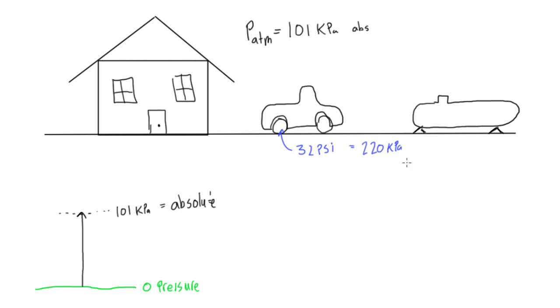Alright, now this is actually what we call a gauge pressure, so I'm going to write this here, gauge, or also sometimes you see psig. This means that this is 32 psi higher than the absolute pressure, and the absolute pressure is the atmospheric pressure that's all around it.